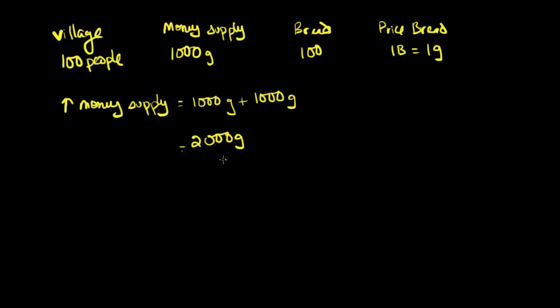You might ask yourself, what will happen to the price of bread? There is now twice as much money in circulation, and there's just the same amount of bread. What you would imagine is probably likely to happen is that since there's more gold coins chasing the same quantity of bread, you might expect the price of bread to go up. It's reasonable to say the price of bread will be greater than what it was before, which was one gold coin. It's probably likely going to be somewhat close to two gold coins, since the money supply doubled and there hasn't been any increase in the amount of bread produced.